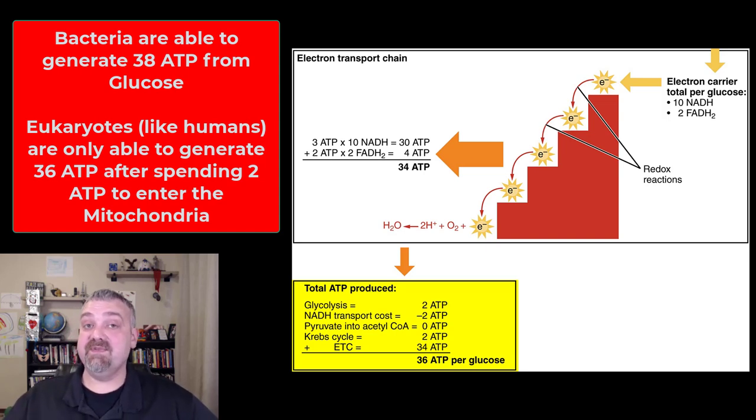We make a net gain of two ATP during glycolysis, just like bacteria do. We have to spend two ATP to get these building blocks into the mitochondria. Remember the mitochondria, the powerhouse of the human cell, the site of 95% of ATP production. It's a very important organelle, but it costs money to use it. So we make 38 ATP just like bacteria do. We have to spend two that they don't. And that's why if I ask you, depending on the class you're in, if you fully oxidize glucose in a human, you are going to get 36 ATP. In a bacteria, it's going to be 38, and that's why.